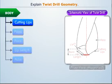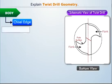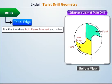Now let us see the bottom view of the body of the drill. We see that both the flanks intersect each other at this line. This line of intersection is known as the chisel edge.